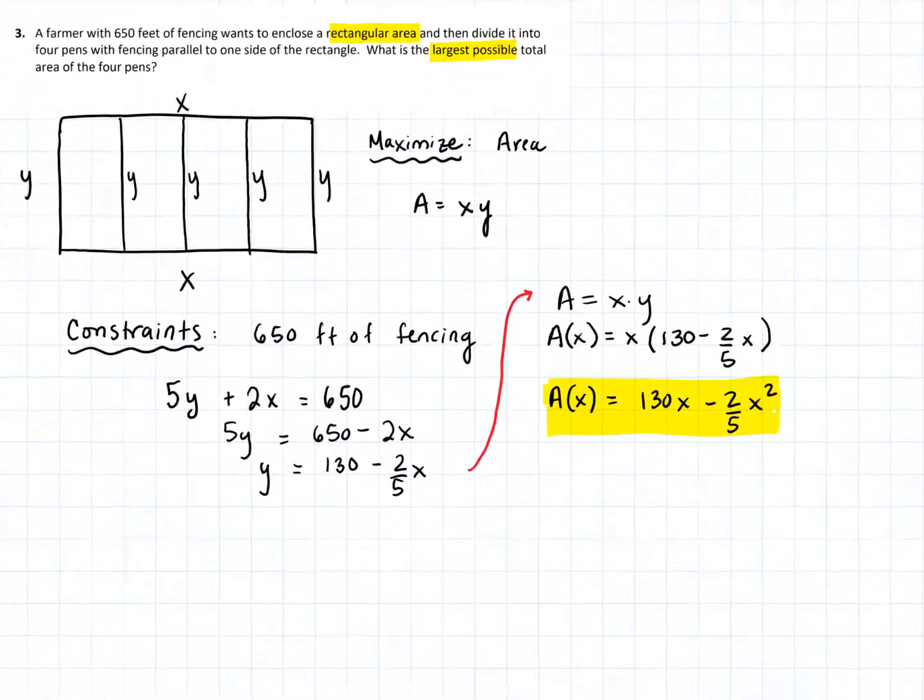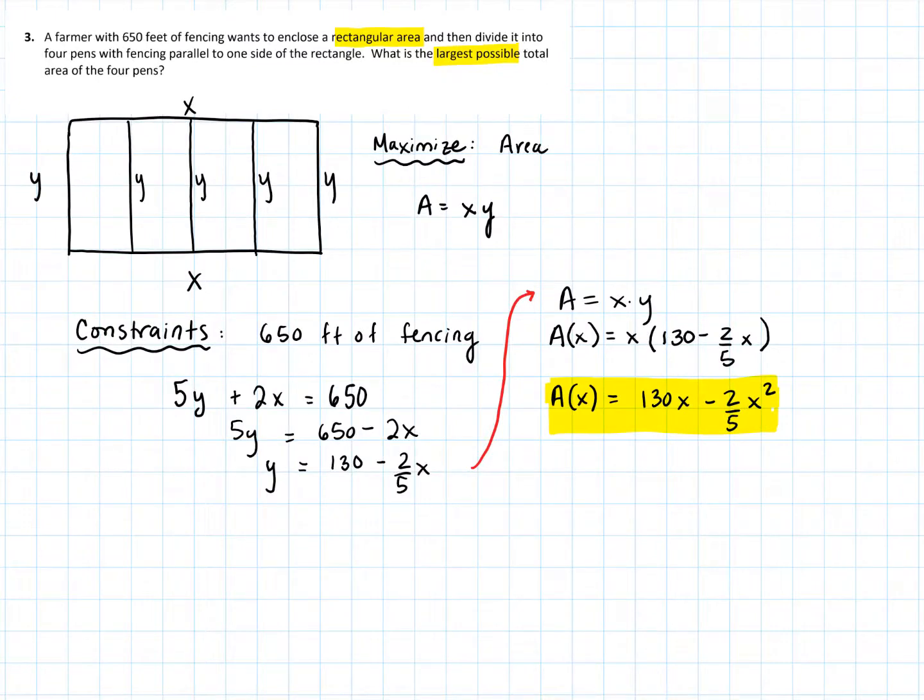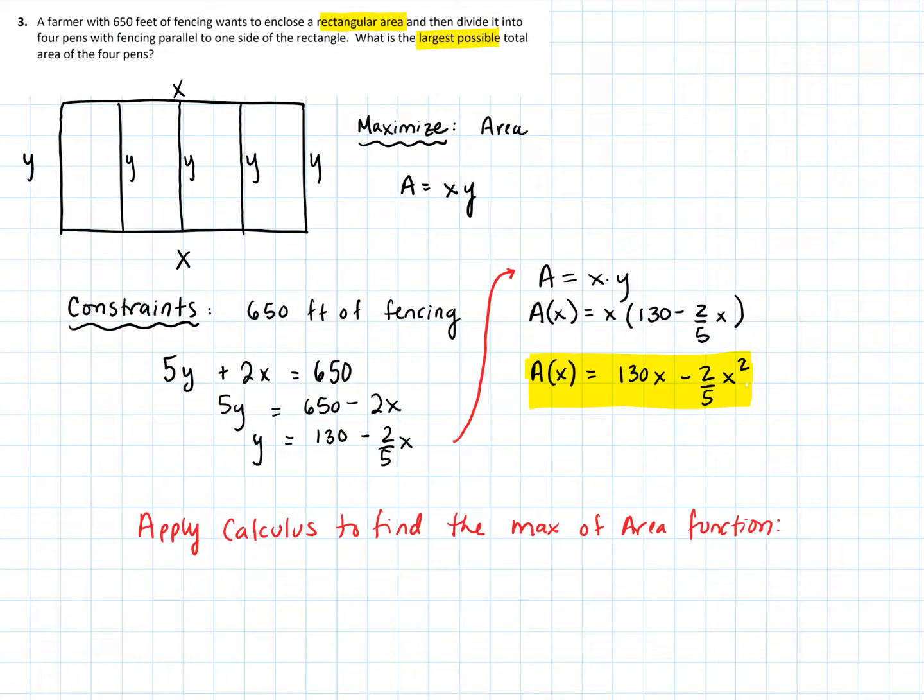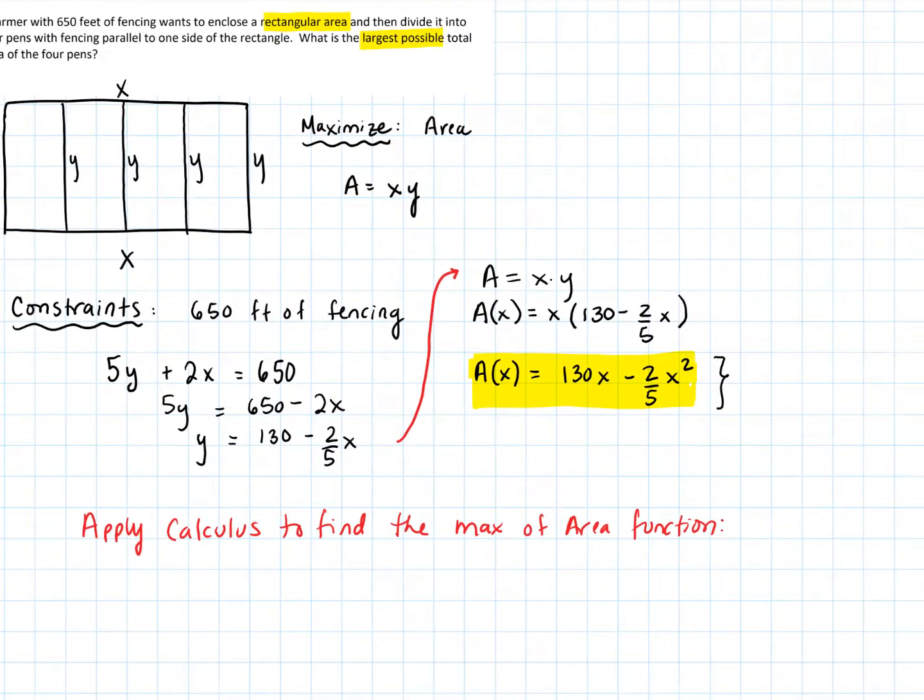So that's the function that I'm going to use. So all of what we've done right here has actually had nothing to do with calculus. But now we're going to actually apply the calculus. So at this point, we're going to apply calculus to find the max of the area function. Now before we do that, because there is context here, this particular function, as it is, has a domain. If it was a function without any context, the domain would actually be all reals, from negative infinity to infinity.